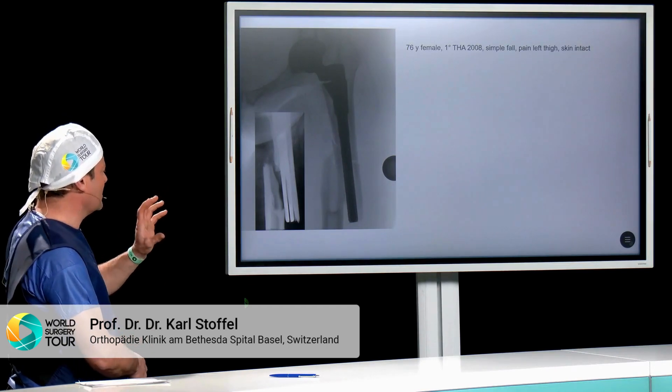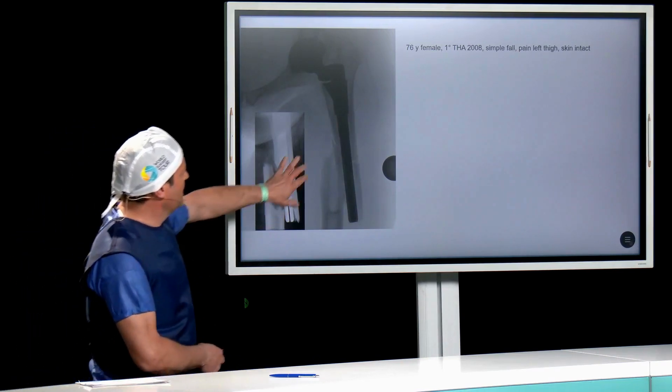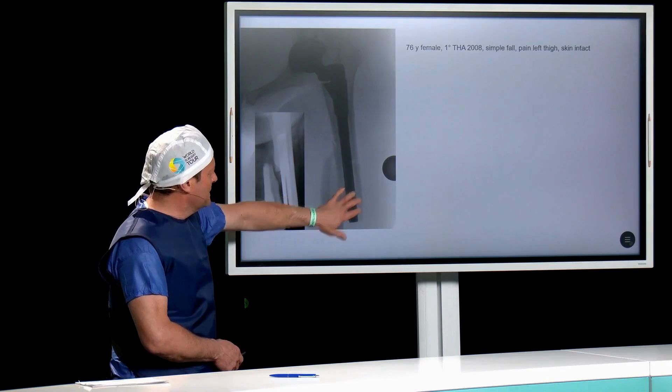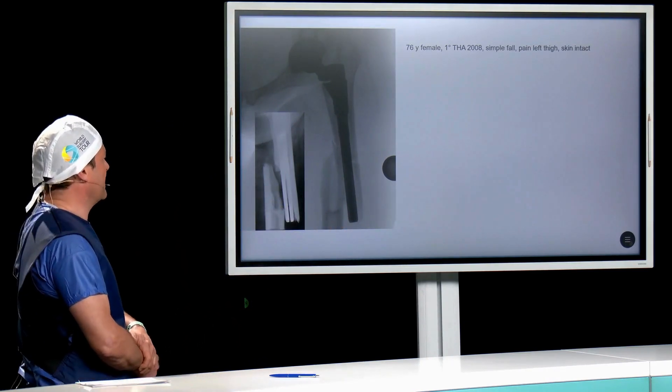And the fracture is sort of a short spiral fracture with maybe some comminution here at this area, but I think the two main fragments maybe is attached to the proximal fragment distally, and here is a short spiral fracture at the distal fragment.